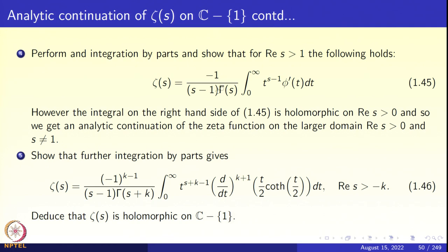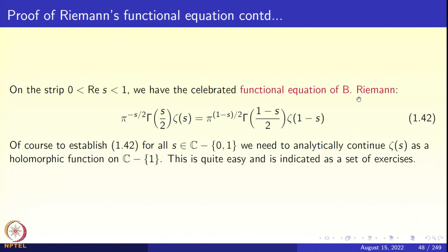We have completed the proof of the analytic continuation of the zeta function, and thus we have completed the proof of the functional equation — not only on the strip 0 < Re(z) < 1, but on the complex plane punctured at two points, 0 and 1. That completes this section on the Riemann zeta function. We proved the basic convergence theorem for Fourier series, used it to study the Jacobi theta function and its functional equation, and from there derived the functional equation for the Riemann zeta function.